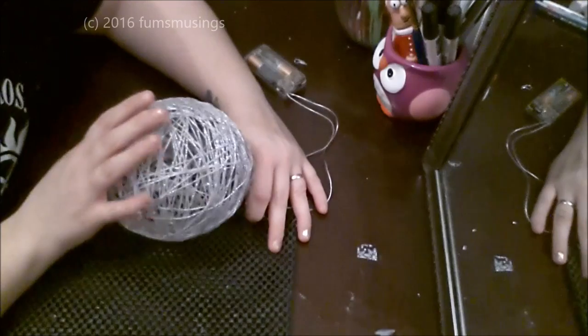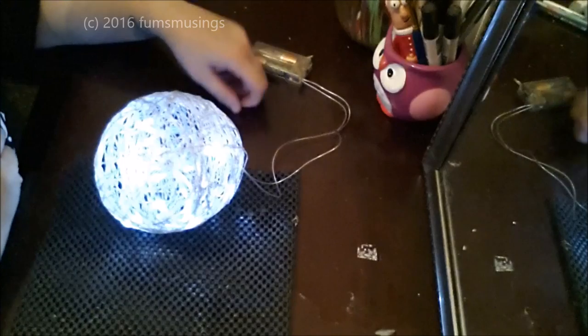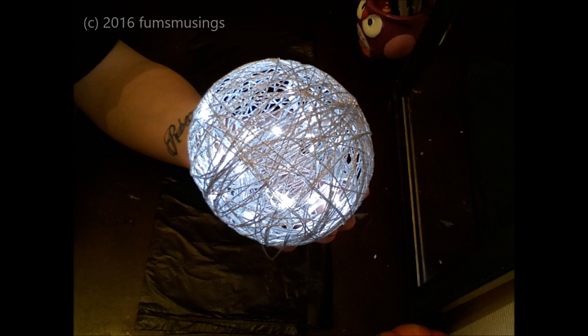And then when you turn it on it will look something like this. And that's it. That's how to make a twine ball decoration. Hope you enjoyed the video. Thank you for watching and I'll see you in the next one. Bye for now.